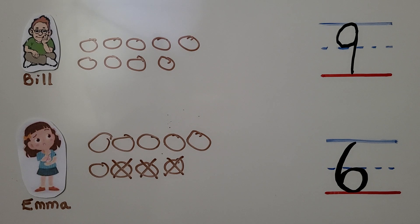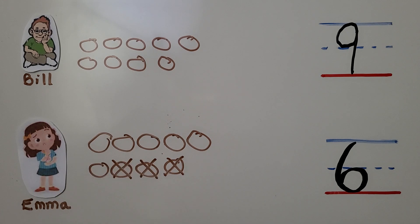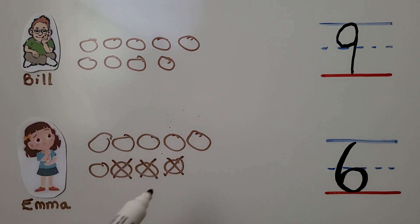We can use a quick picture to help us solve the problem. We can draw something quick like a line or a circle to represent the object. If we're taking some away, we cross off the number less or fewer. When we draw a number greater than another, we draw more counters. So to draw a number less than, we draw fewer circles, or draw the matching number and cross off the number fewer. Bill ate nine cookies; Emma ate six cookies.